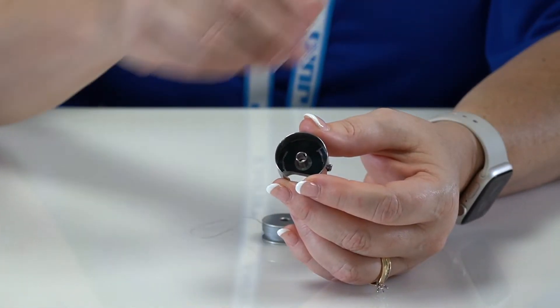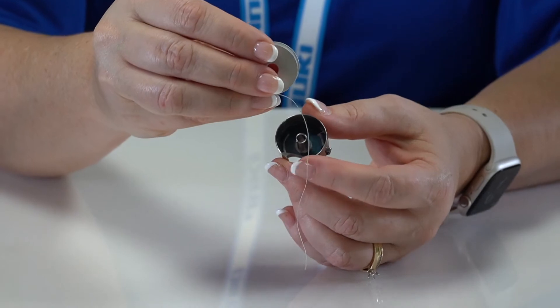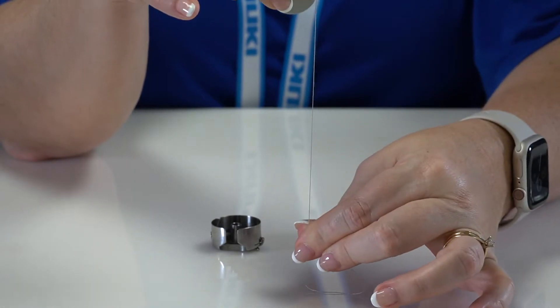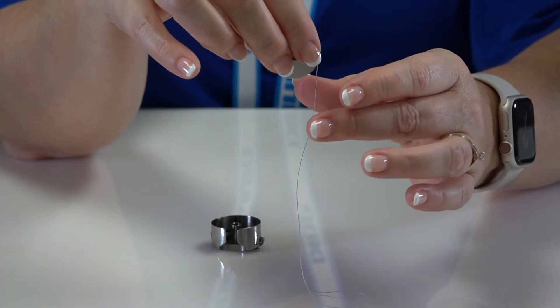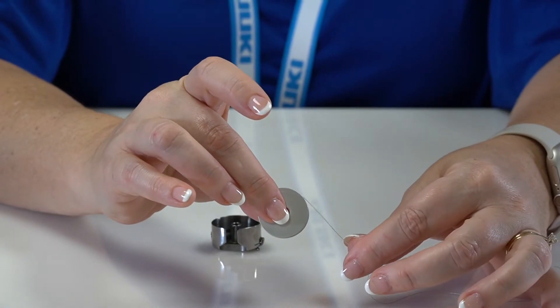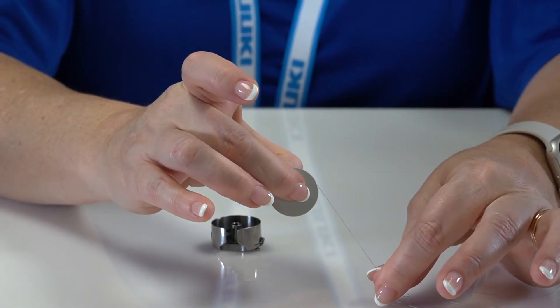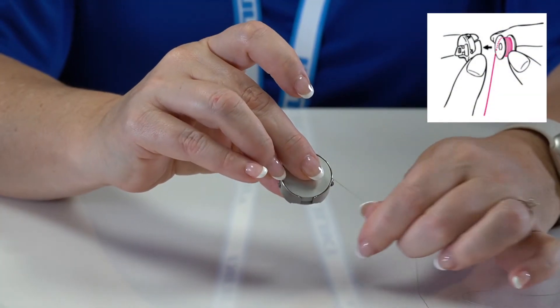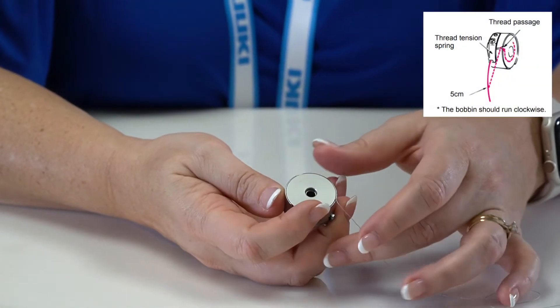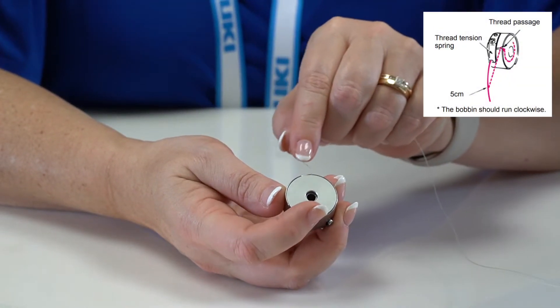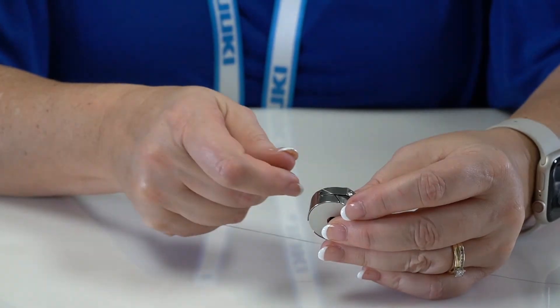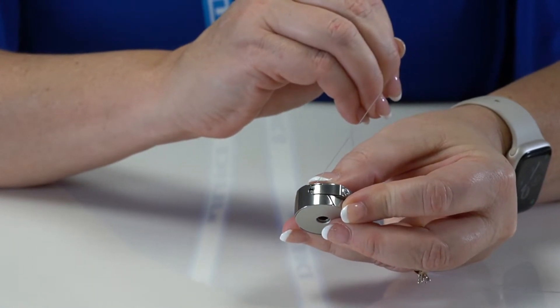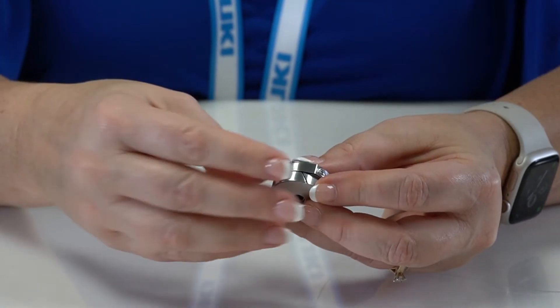Let's be intentional on how we load the bobbin into the bobbin case. If you're holding the bobbin towards you, make sure the tail of the thread is coming down on the right-hand side and running clockwise. Hold the bobbin case so that the opening is at the bottom. Snap the bobbin into the case and bring the thread counterclockwise until you reach the slit in the case. Pass the thread through the slit and under the thread tension spring, and pull the thread a couple of inches.